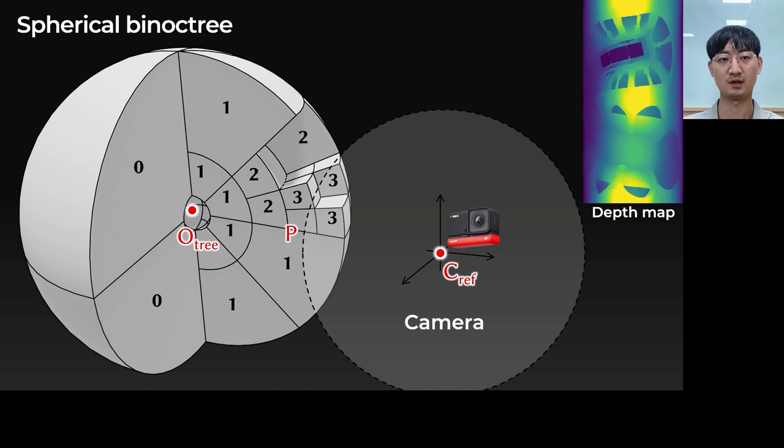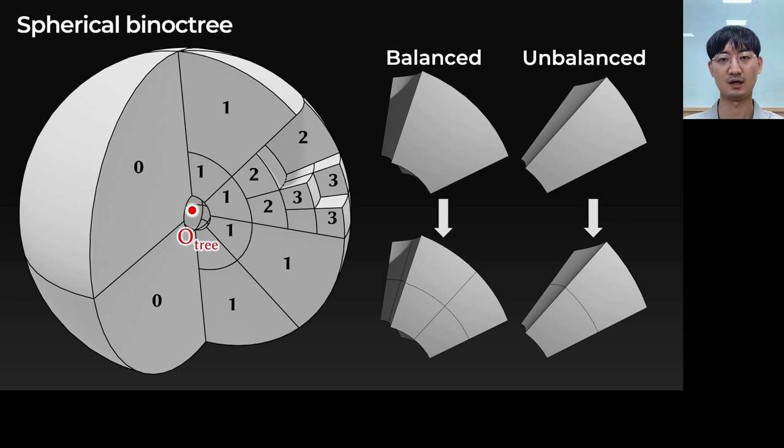After estimating the per-frame depth maps, we accumulate them in our novel data structure called spherical binoctree. When the depth value is small, it requires high-resolution details, so we divide the node many times. On the other hand, when the depth value is large, it does not need high-resolution details, so we divide the node less.